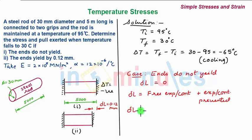So delta L equals alpha delta T times L plus sigma L divided by E. Upon substituting the values, we get zero equals 12 times 10 to the power minus 6, multiply by delta T is minus 65 into length is 5000 mm.